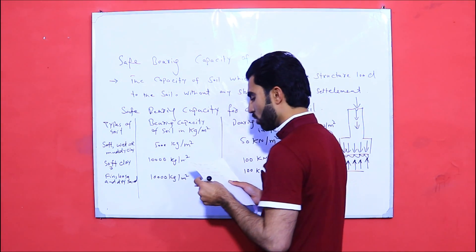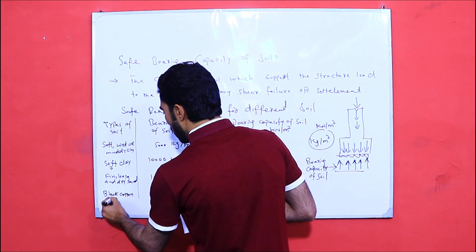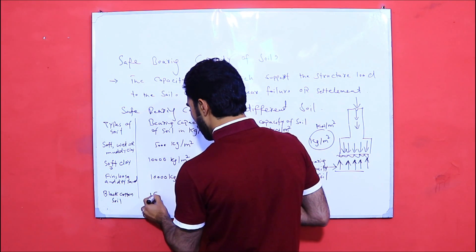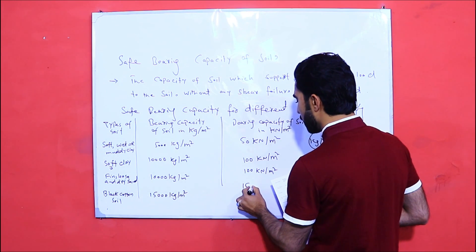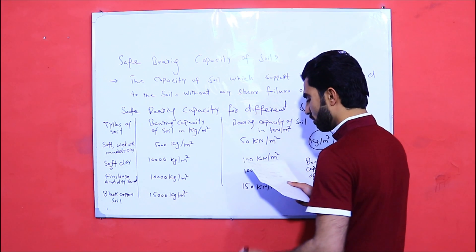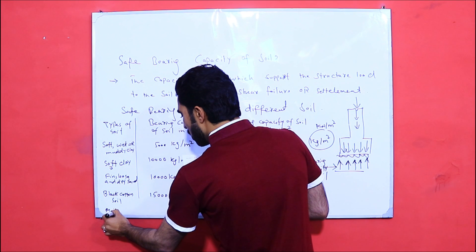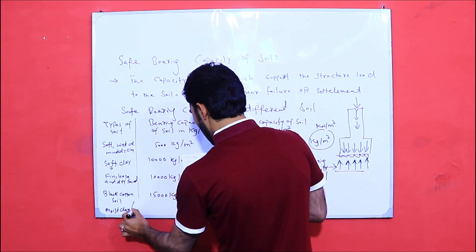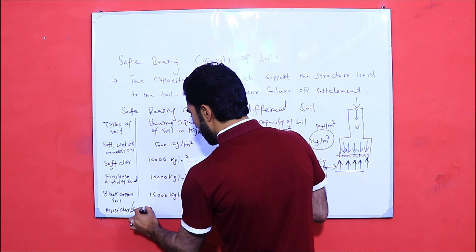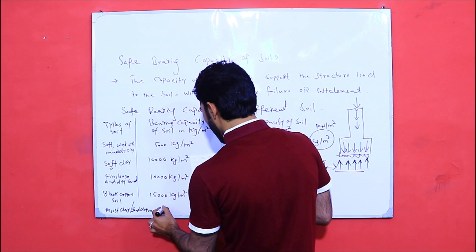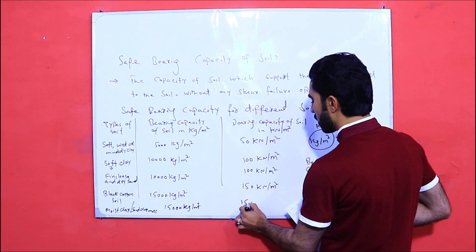The next soil type is black cotton soil, which has a bearing capacity of 15,000 kg per meter square, or 150 kilonewton per meter square. The following type is moist clay or sand clay, which also has a bearing capacity of 15,000 kg per meter square, or 150 kilonewton per meter square.